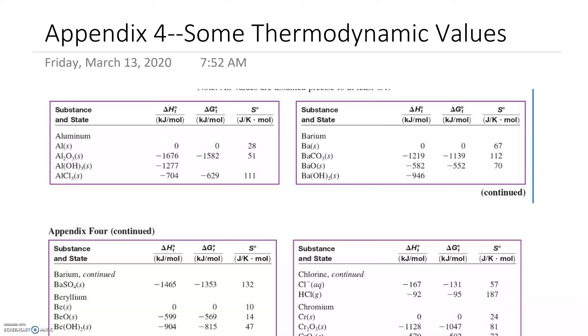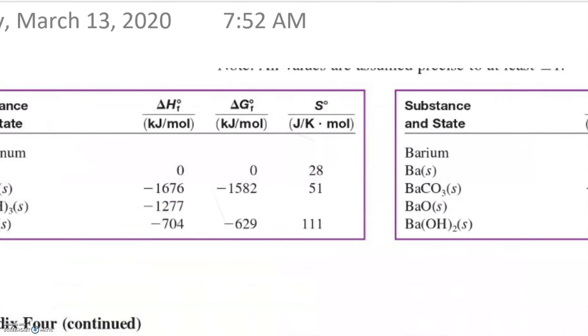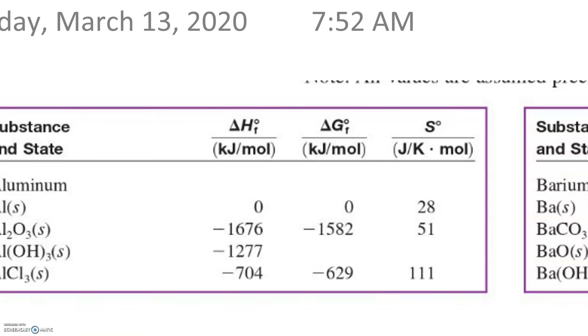Let's take a look at this appendix 4. This is where we get all of our thermodynamic values from. Something interesting, have you noticed that all of these values have this little degree sign after them? What does that mean? Let's take a look and go a little further with this because that little degree sign is something we should pay a bit more attention to.